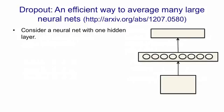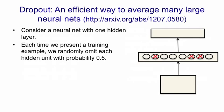So consider the neural net with one hidden layer shown on the right. Each time we present a training example to it, we're going to randomly omit each hidden unit with a probability of 0.5. So we crossed out three of the hidden units here.